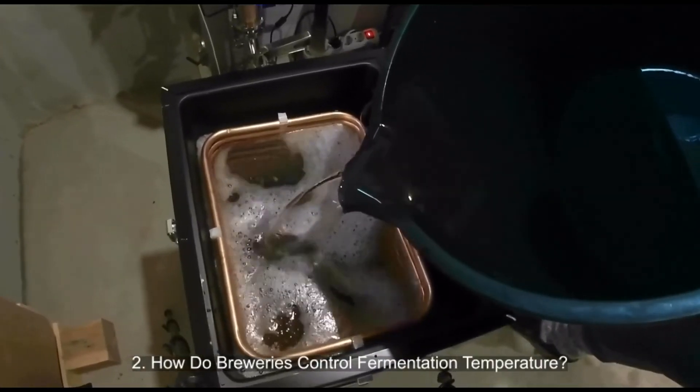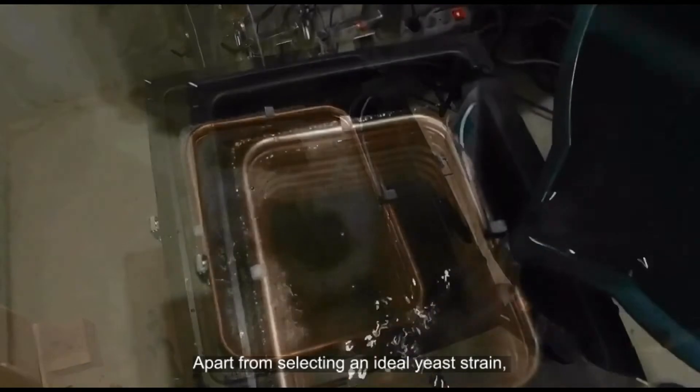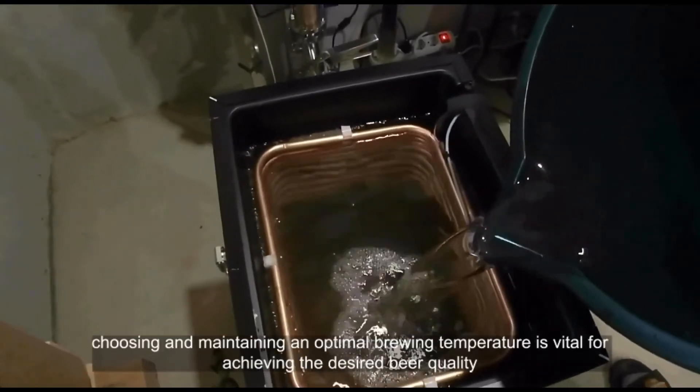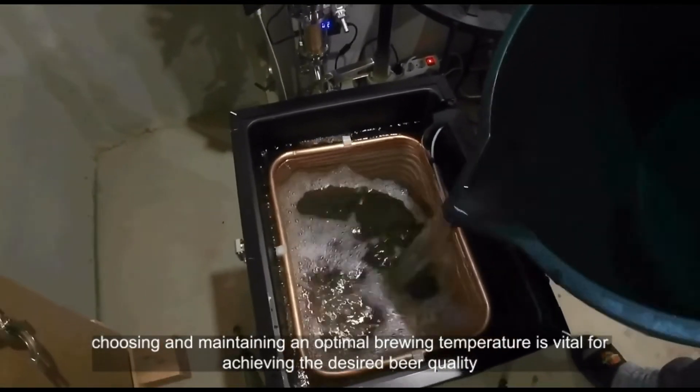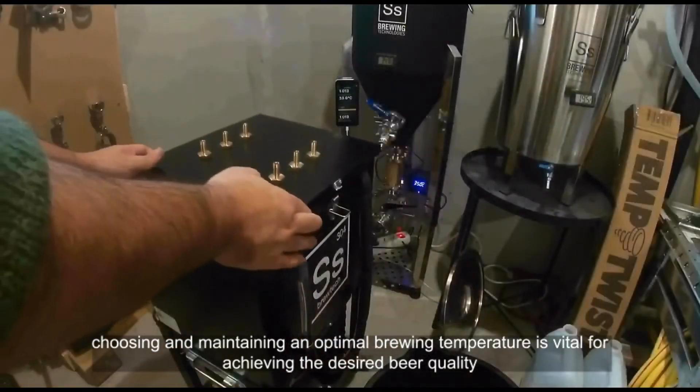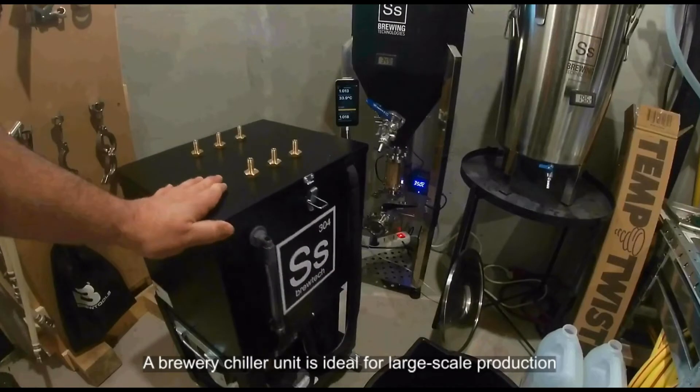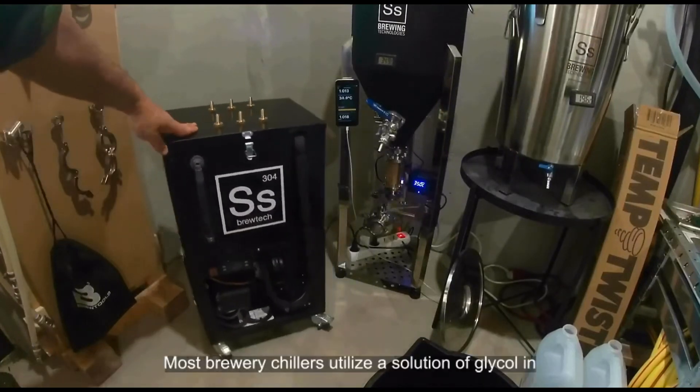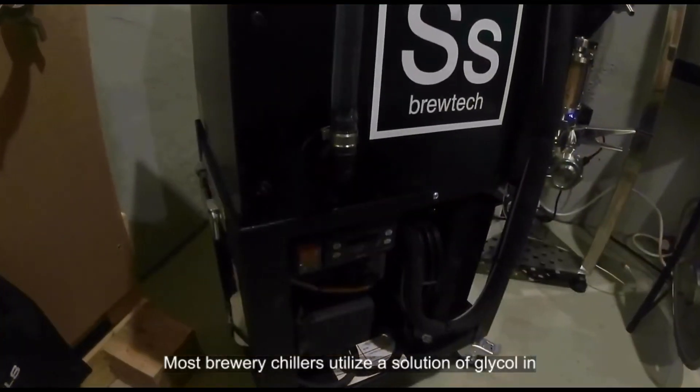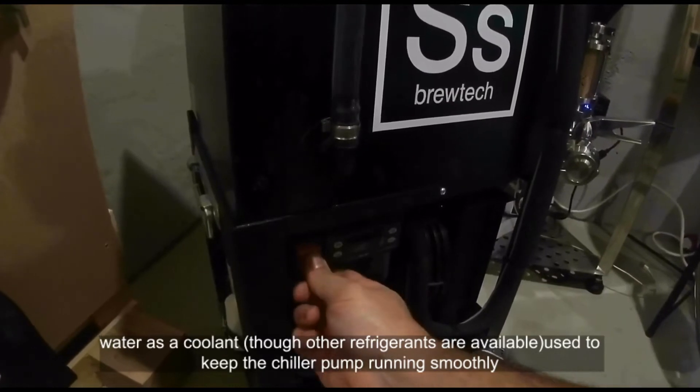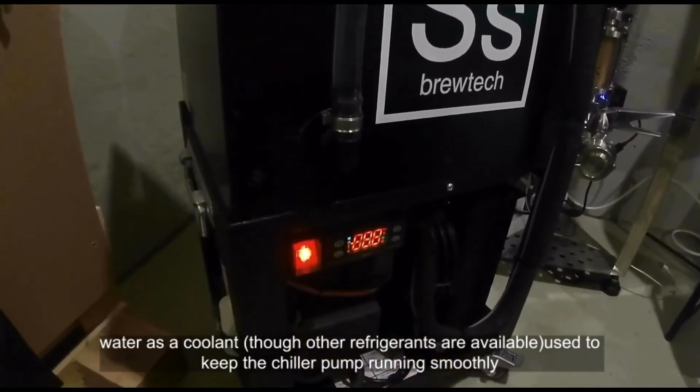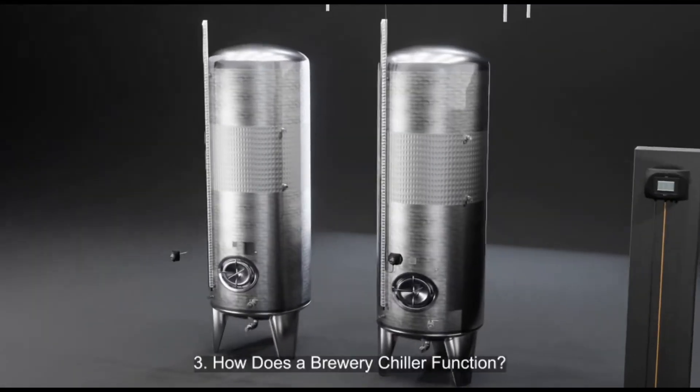How Do Breweries Control Fermentation Temperature? Apart from selecting an ideal yeast strain, choosing and maintaining an optimal brewing temperature is vital for achieving the desired beer quality. A brewery chiller unit is ideal for large-scale production. Most brewery chillers utilize a solution of glycol and water as a coolant, though other refrigerants are available, used to keep the chiller pump running smoothly.